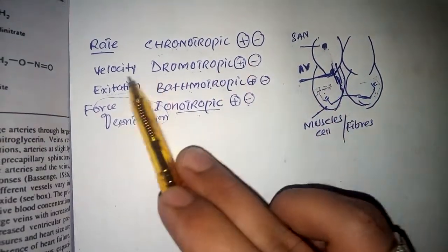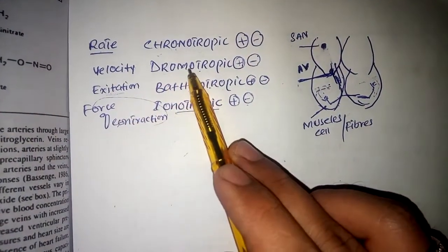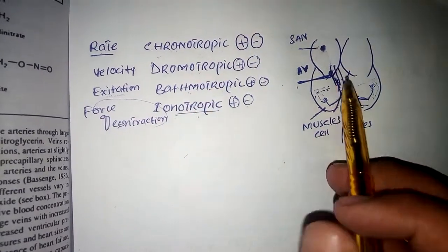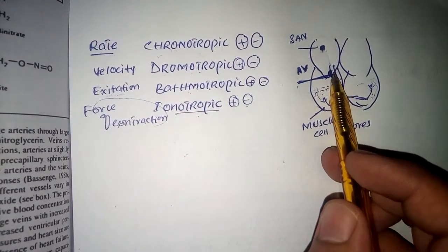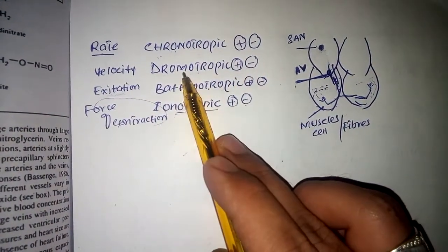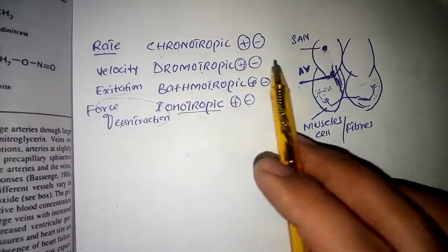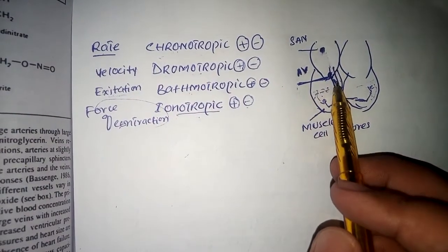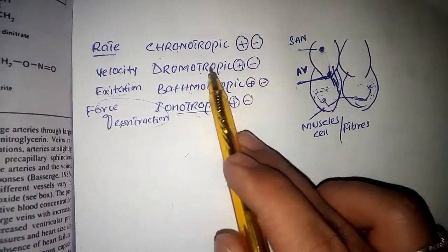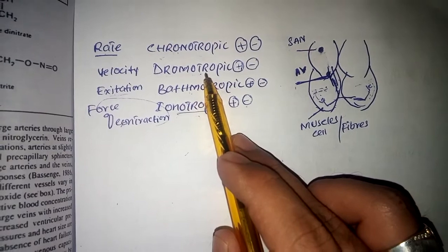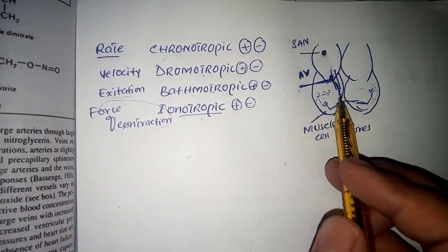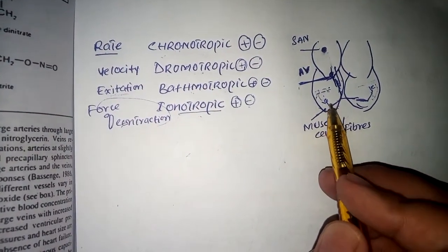The signal travels through the AV node at a certain velocity, and this velocity is called the dromotropic effect. If the signal is moving with a very high velocity, we call it a positive dromotropic effect, and if it is moving with a low velocity, we call it a negative dromotropic effect.